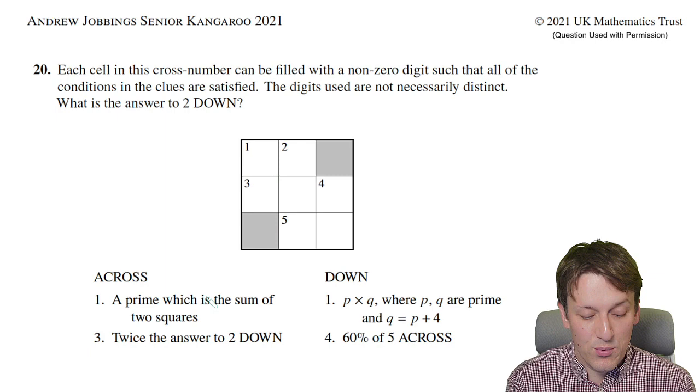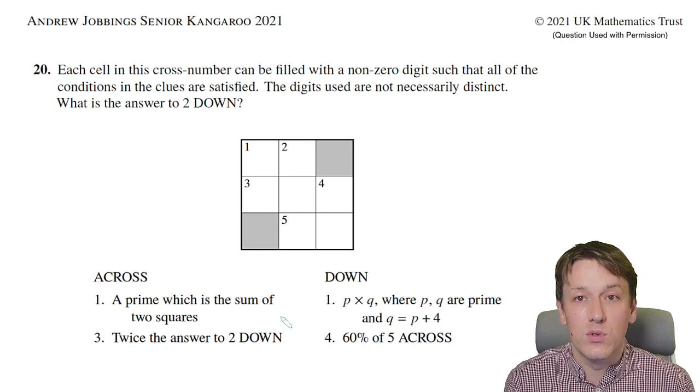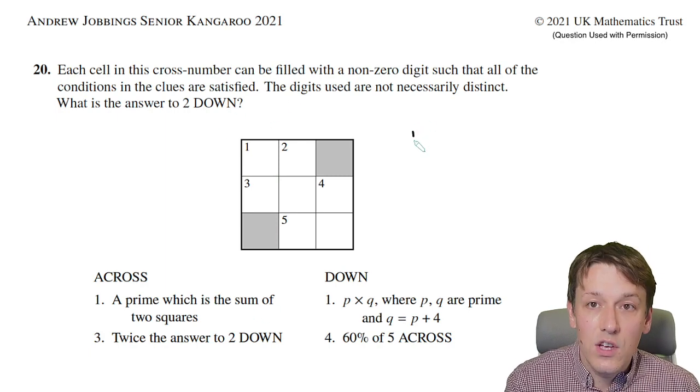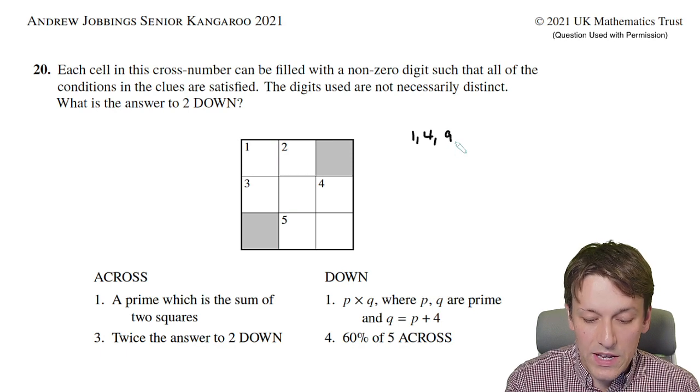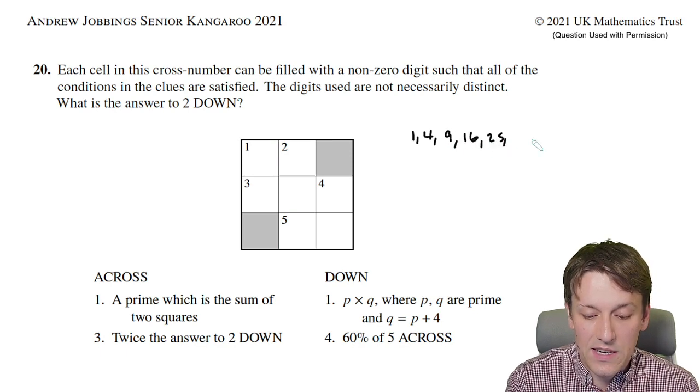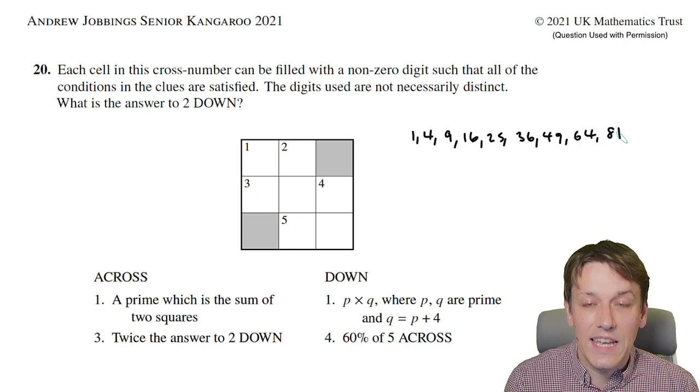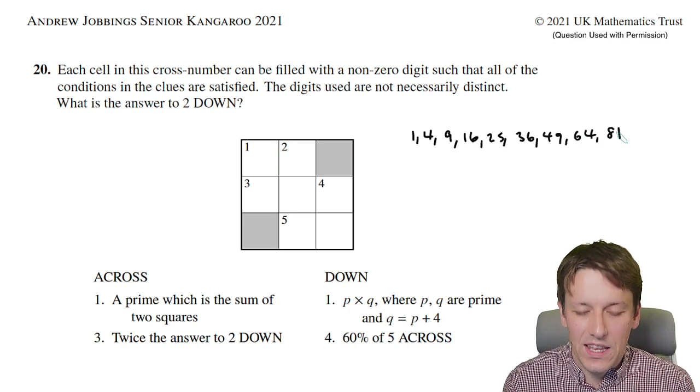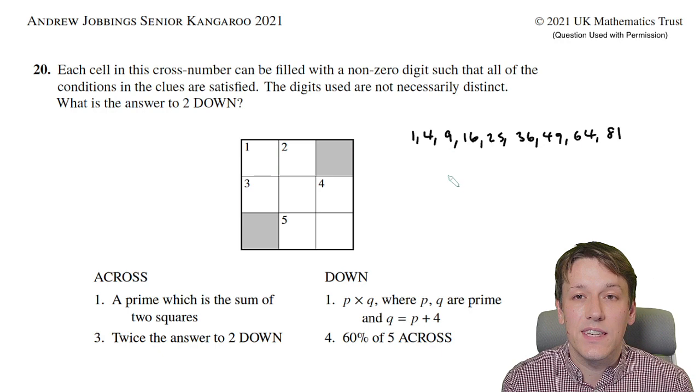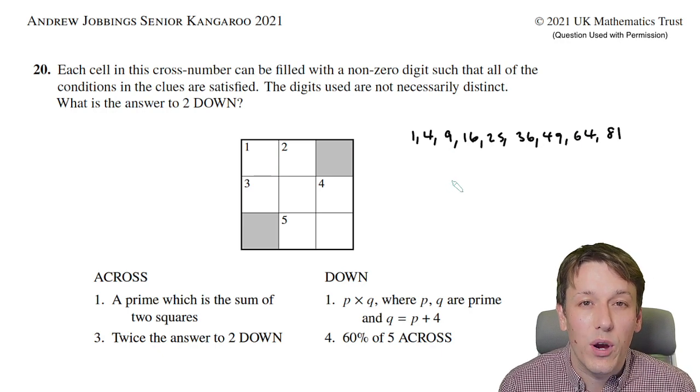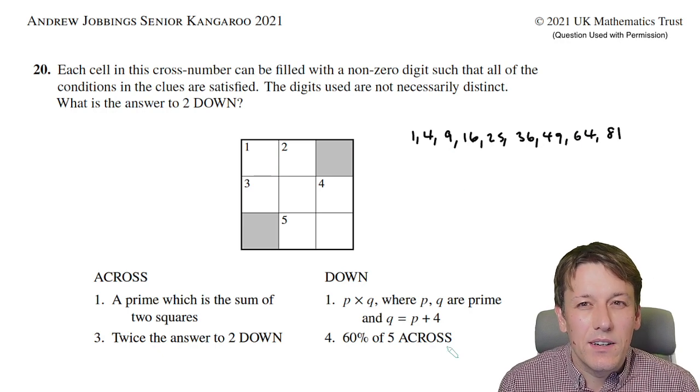One across is a prime number which is the sum of two squares, and it's only two digits, so we can restrict ourselves to the square numbers 1, 4, 9, 16, 25, 36, 49, 64, and 81. But even then, if you start trying to add pairs of these together, you will find quite a lot of prime numbers, so we probably can't start there.